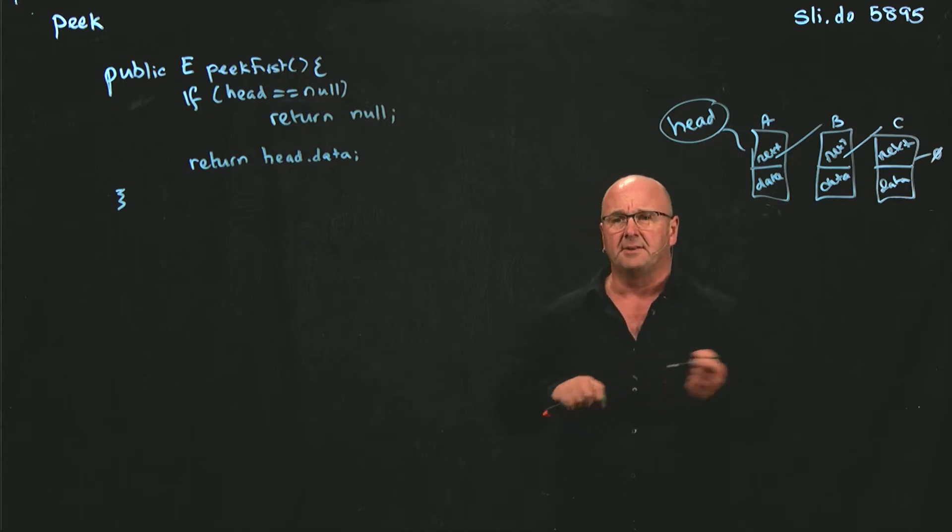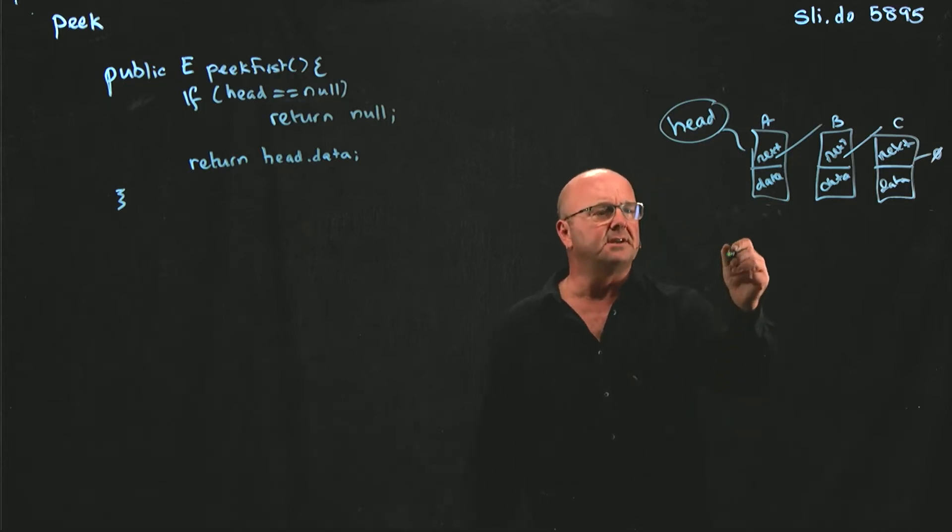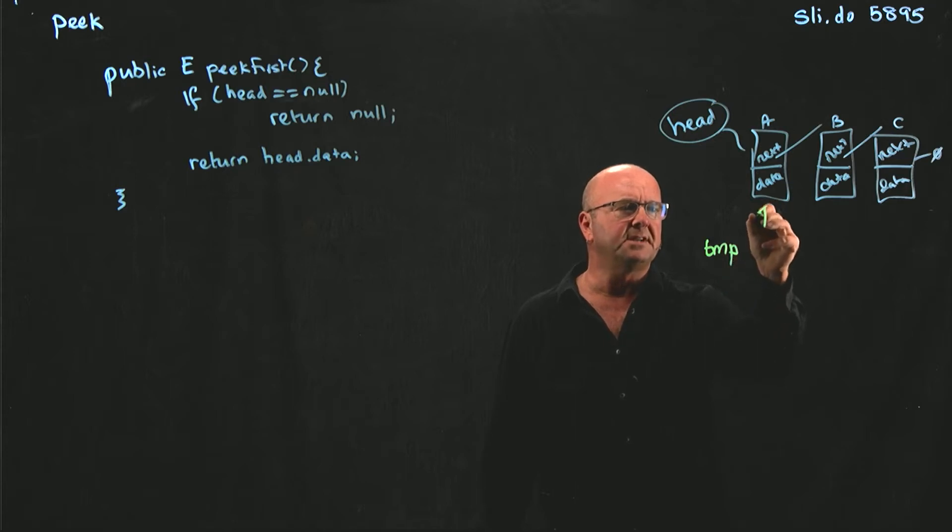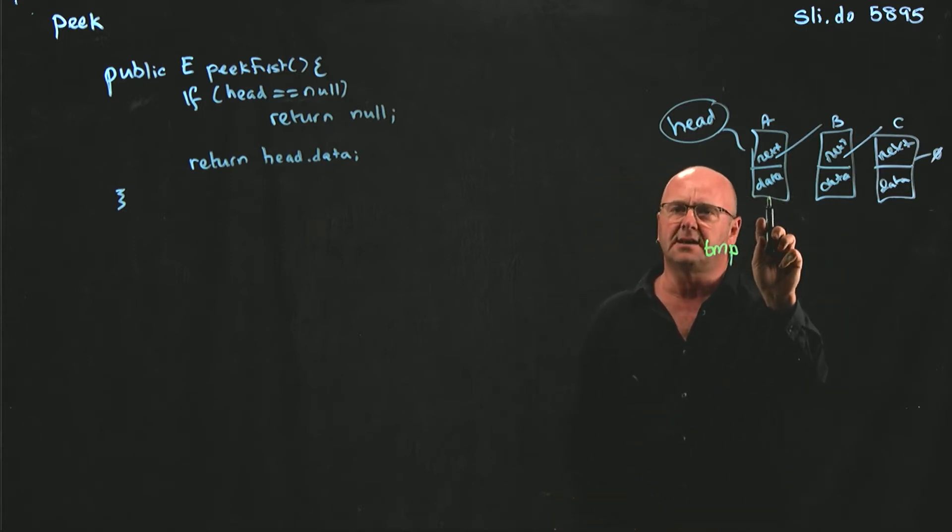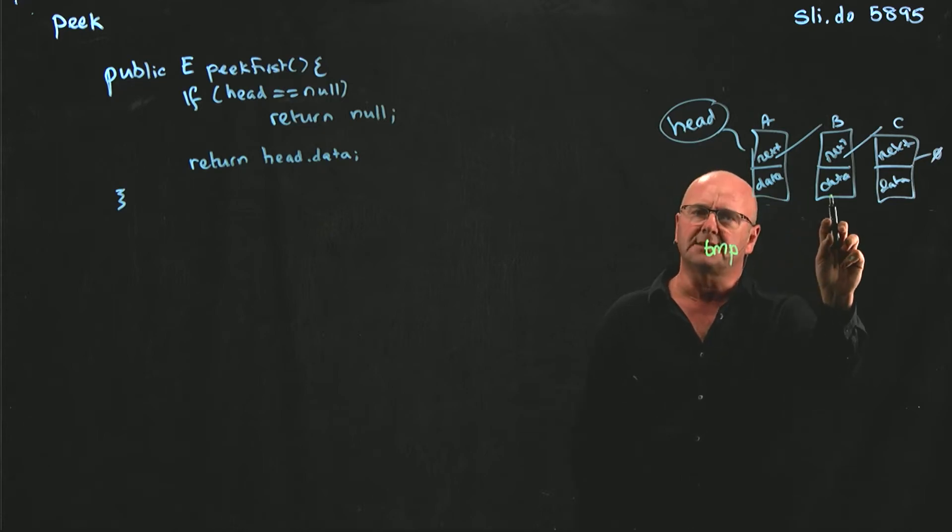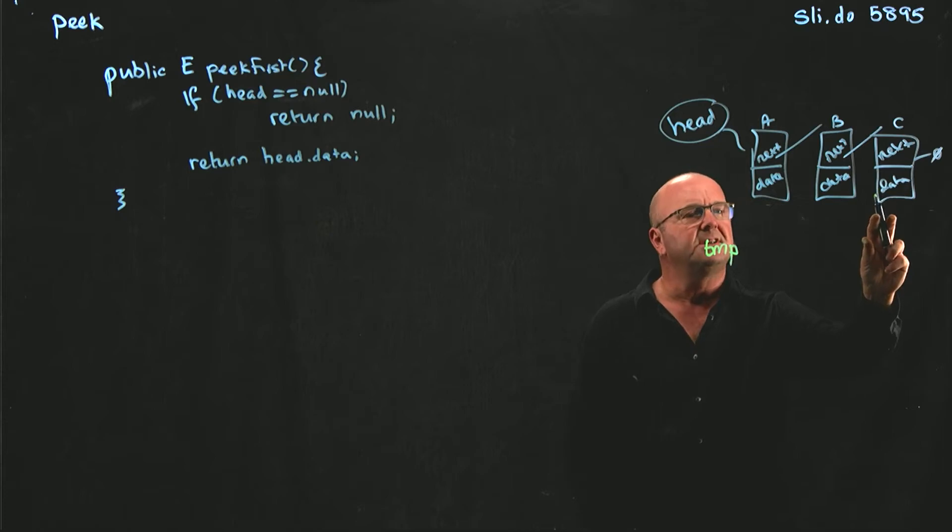For our peak last method, one of the ways that we can do it is set a temporary pointer, and set temp initially pointing to head. And we can move along and say, is this the last element? No. Is this the last element? No. Is this the last element? No. The way that we check whether this is the last element in each of these cases is by looking at the value of the next.